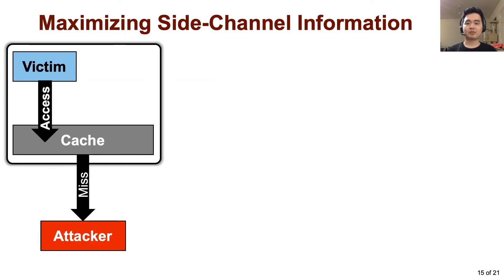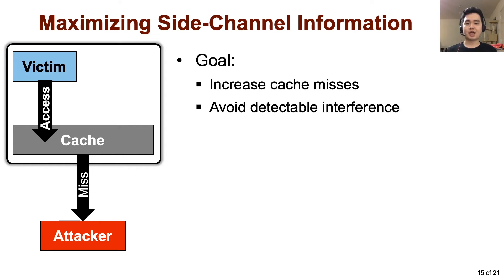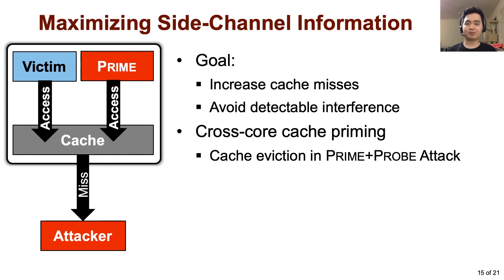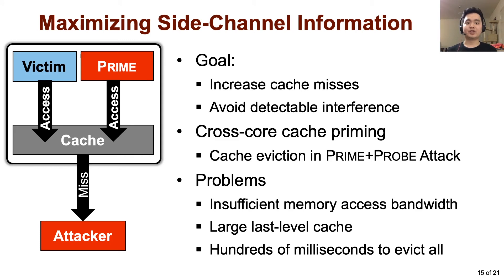So how can we maximize the side-channel information? The goal is to increase cache misses while avoiding any detectable interference, preserving the advantages of the off-chip side channel. A simple solution is to prime the cache — a technique used in prime-probe attacks that sequentially accesses a buffer to evict cache lines. However, we found that we cannot get enough bandwidth needed for the attack, because priming is effective only when it evicts most of the cache lines before the victim accesses the cache. Since the cache is usually a few megabytes, this could take hundreds of milliseconds — far too long compared to the memory access interval of programs, which is on the order of microseconds.